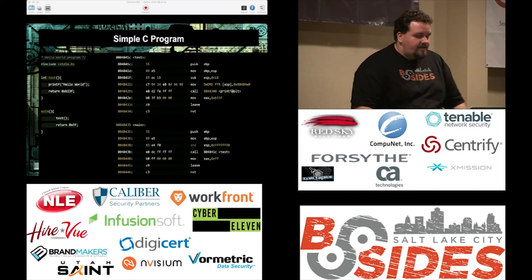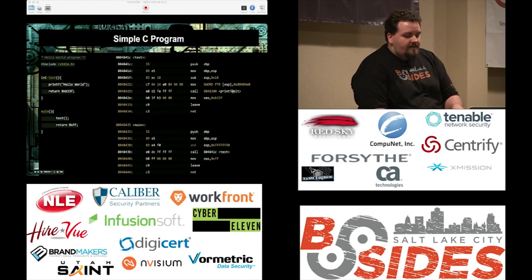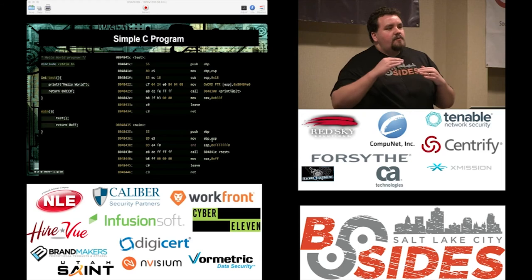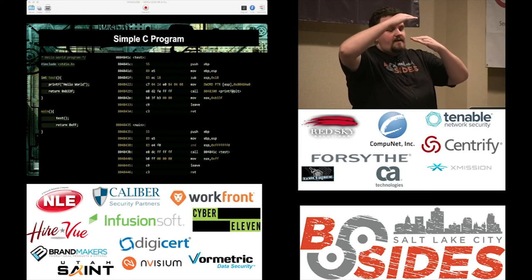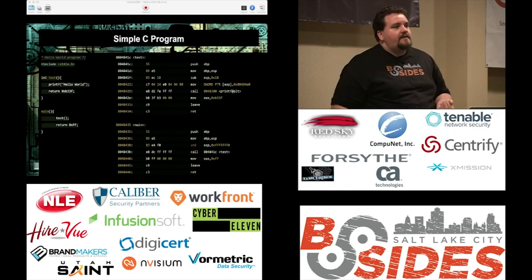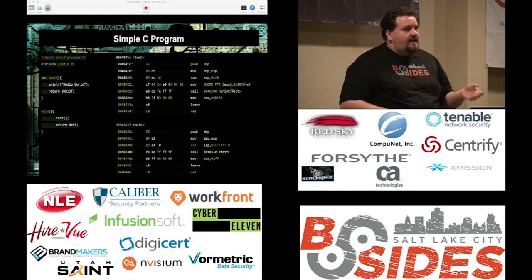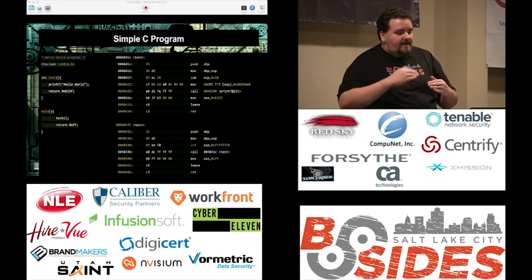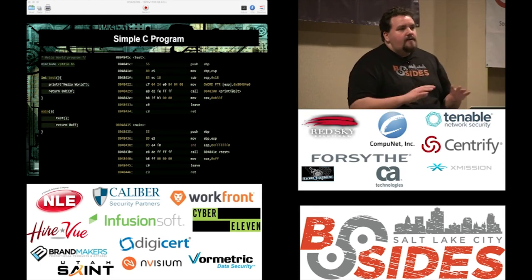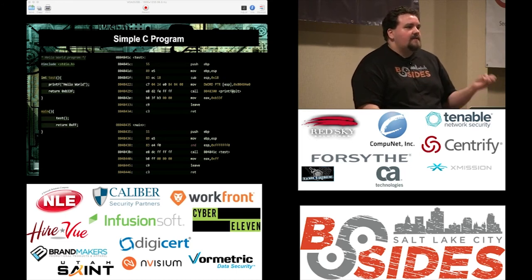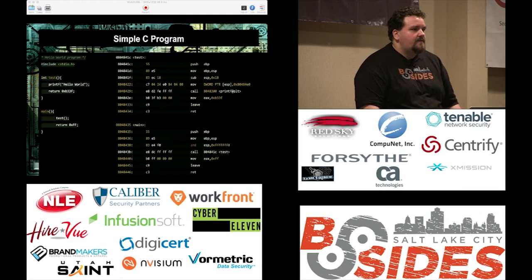We push EBP and move EBP to ESP — that's the stack frame setup. These registers control where the beginning and end of the frame is for this function. When we increase the stack, we're basically declaring variables. Inside your function when you say 'int x, int y,' you'll see the stack pushed down and the values put on the stack representing those variables. Data can also go into registers if it's just a temporary variable not used outside the frame.